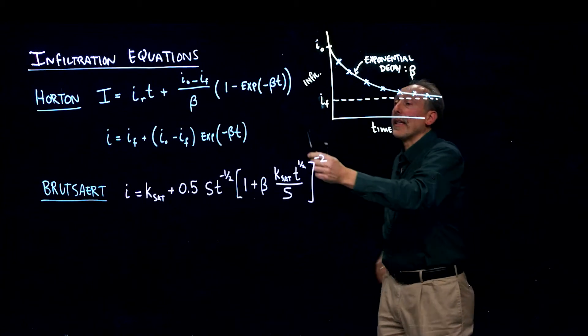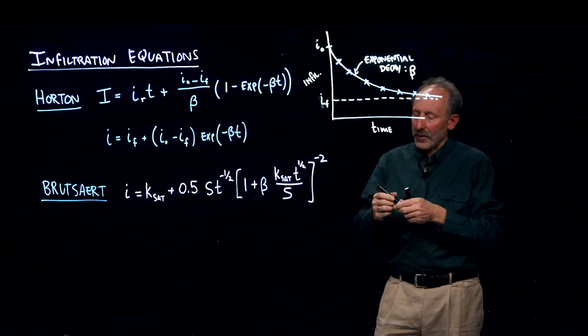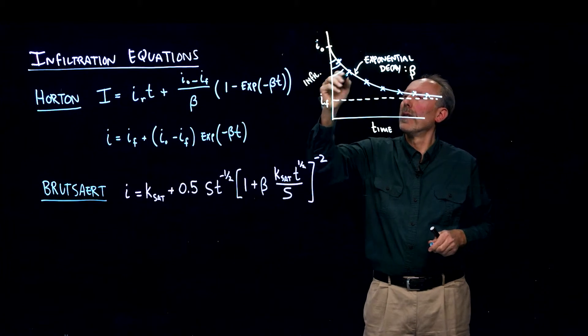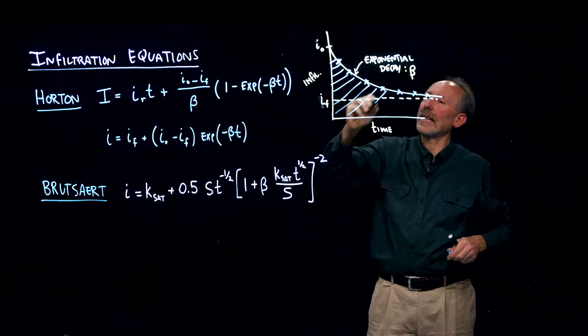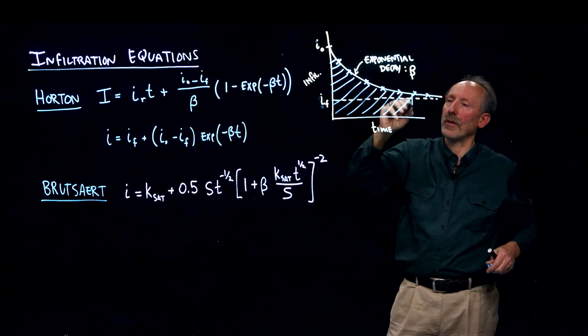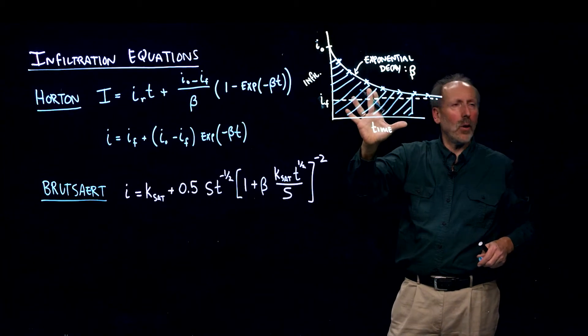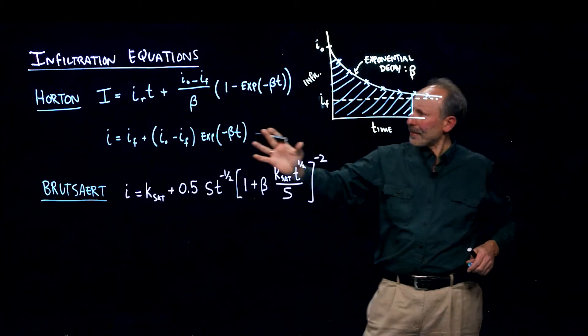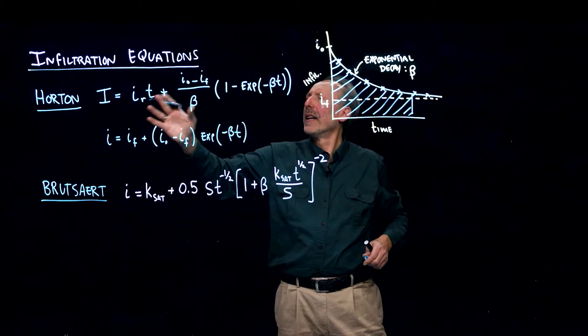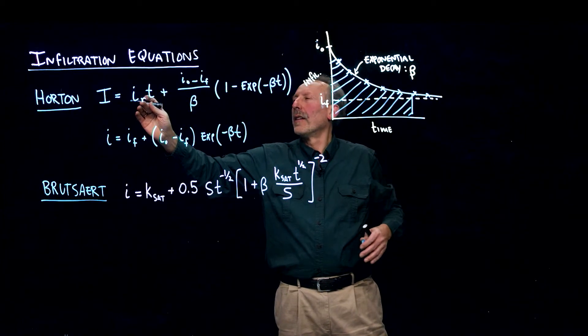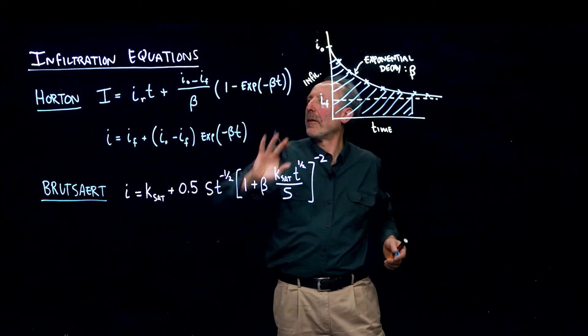And the cool thing is, we can integrate under this curve, so the area under this curve is the cumulative infiltration. That's how much water has gone in in total. So we get to that time, add up all that water, and that's total infiltration. And we can integrate it and get the cumulative infiltration here as the final infiltration times time.